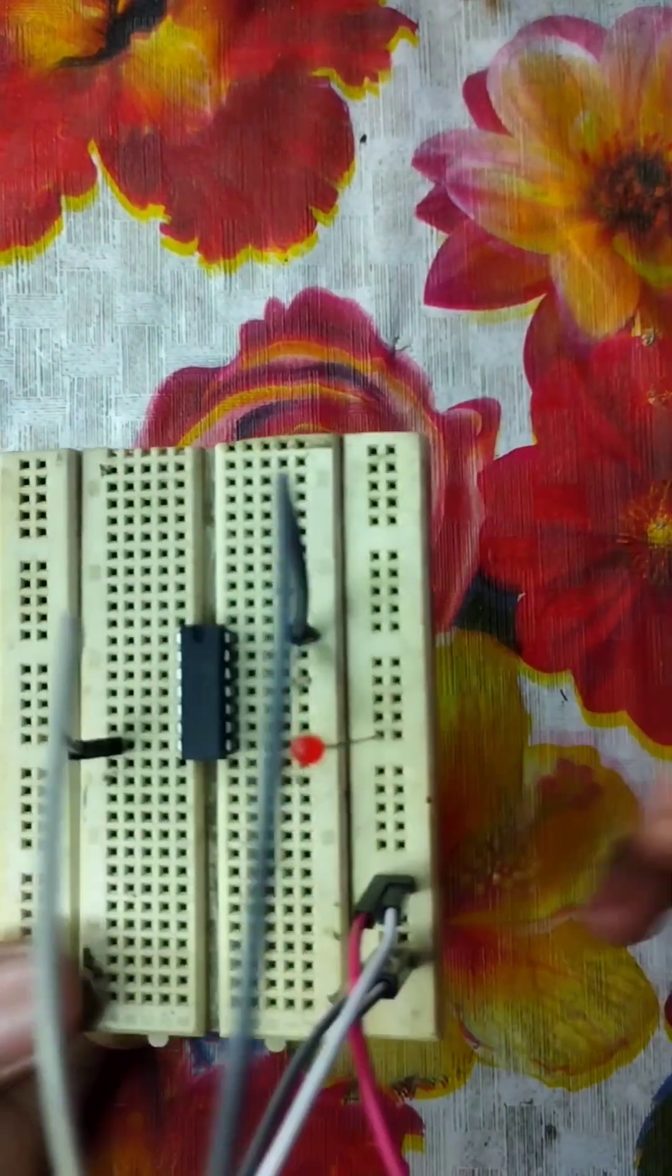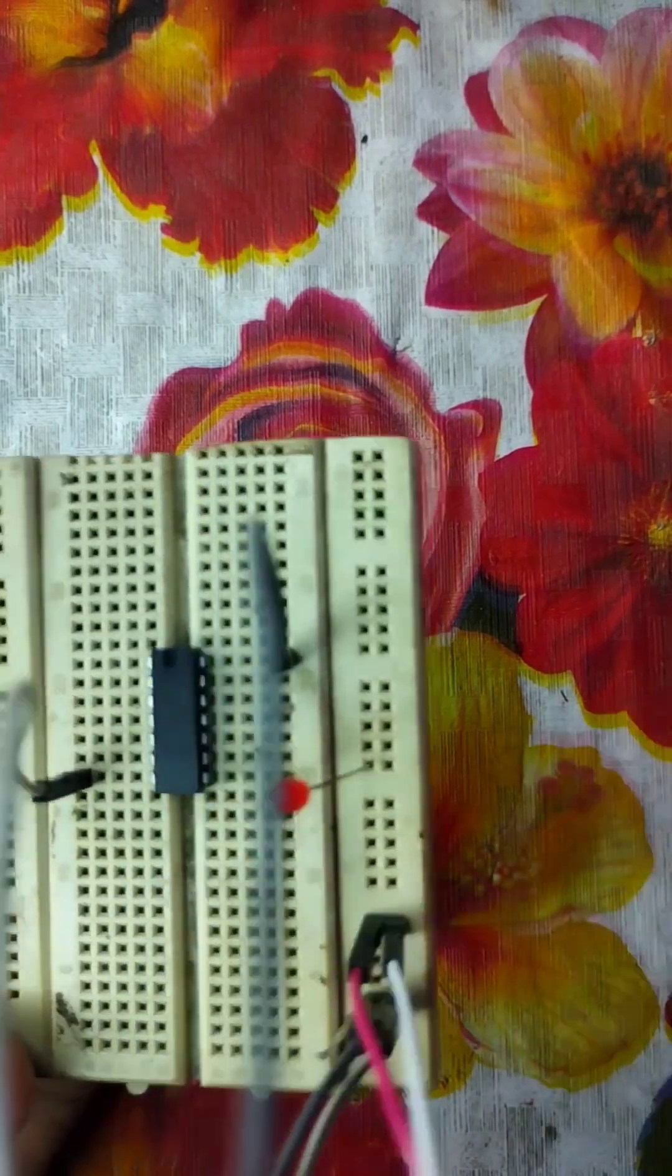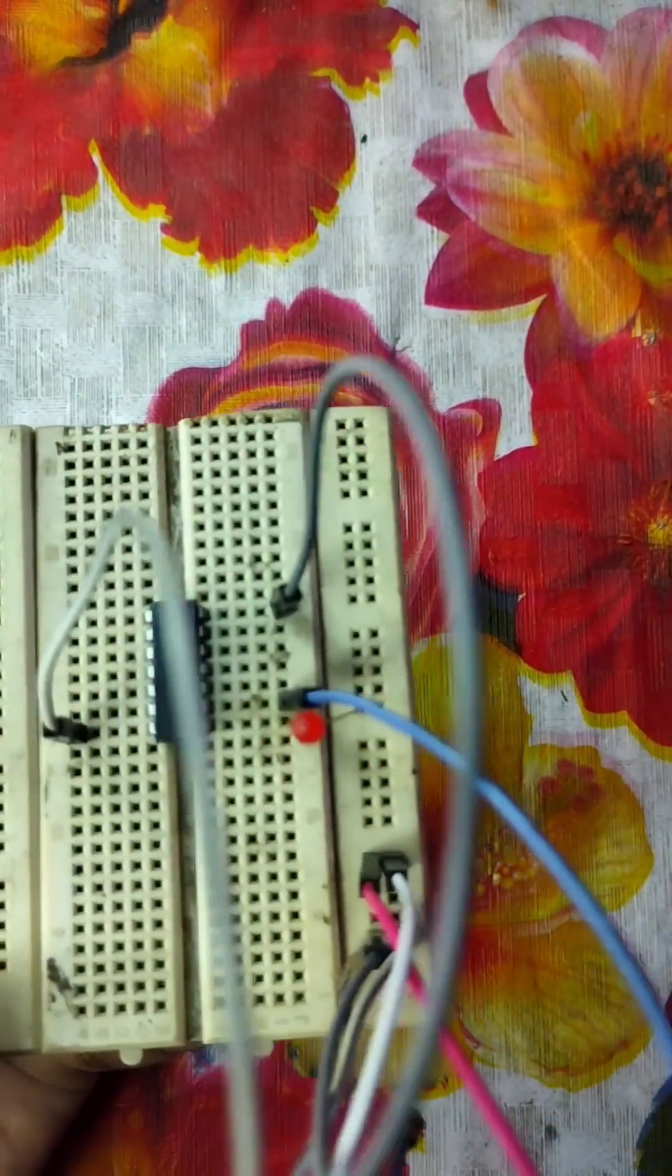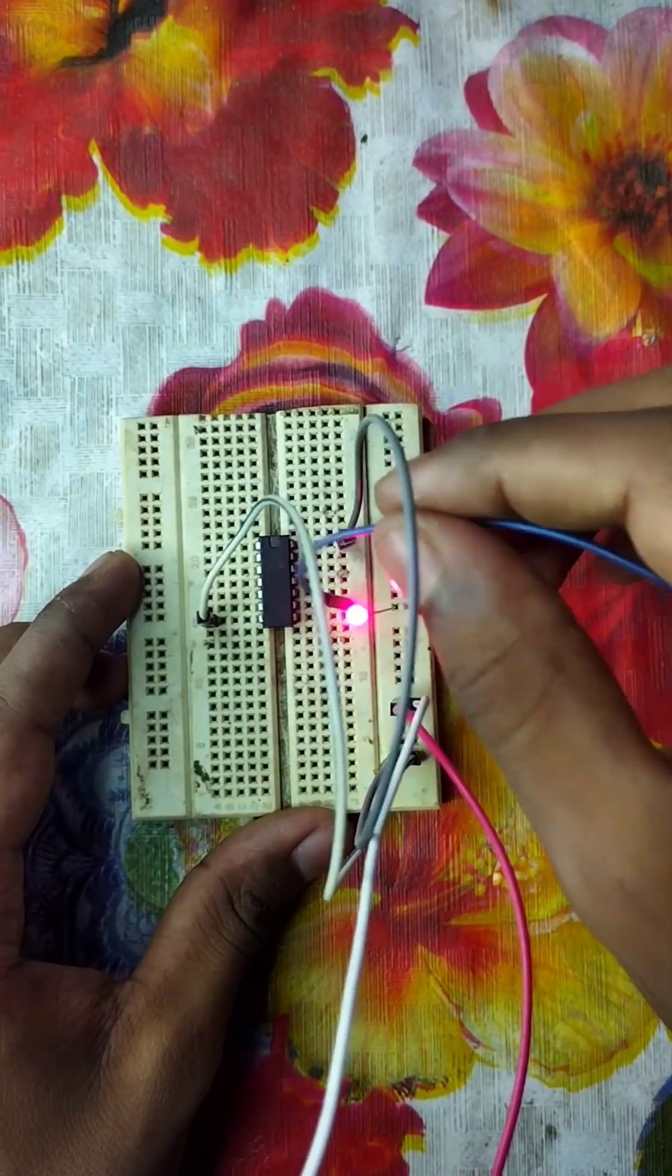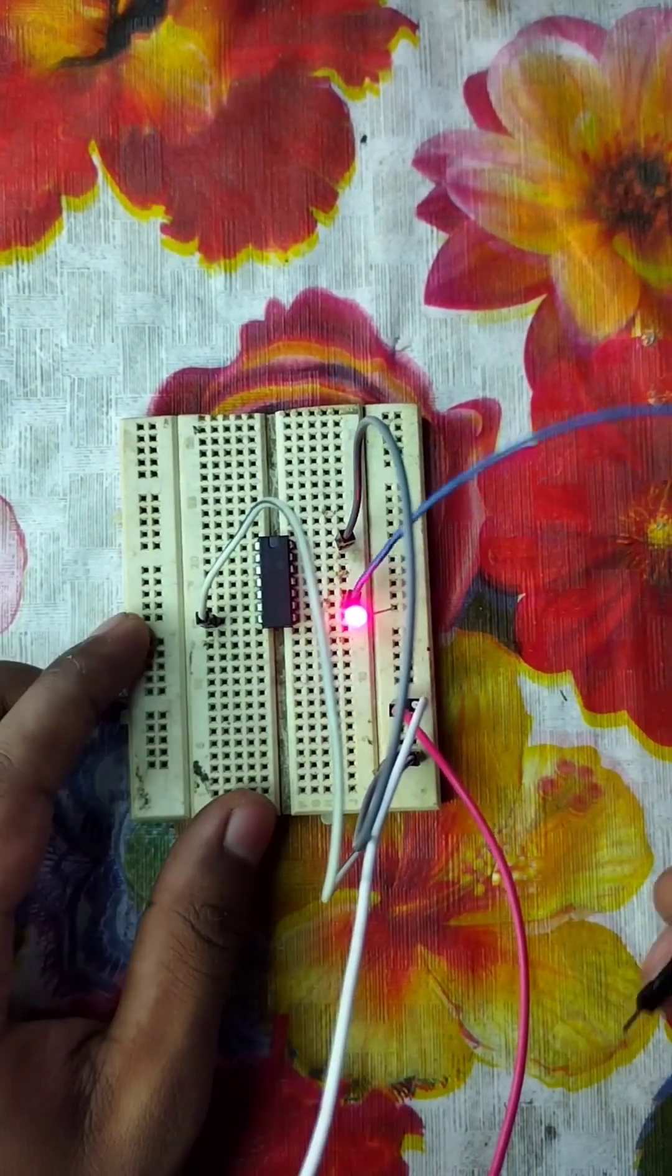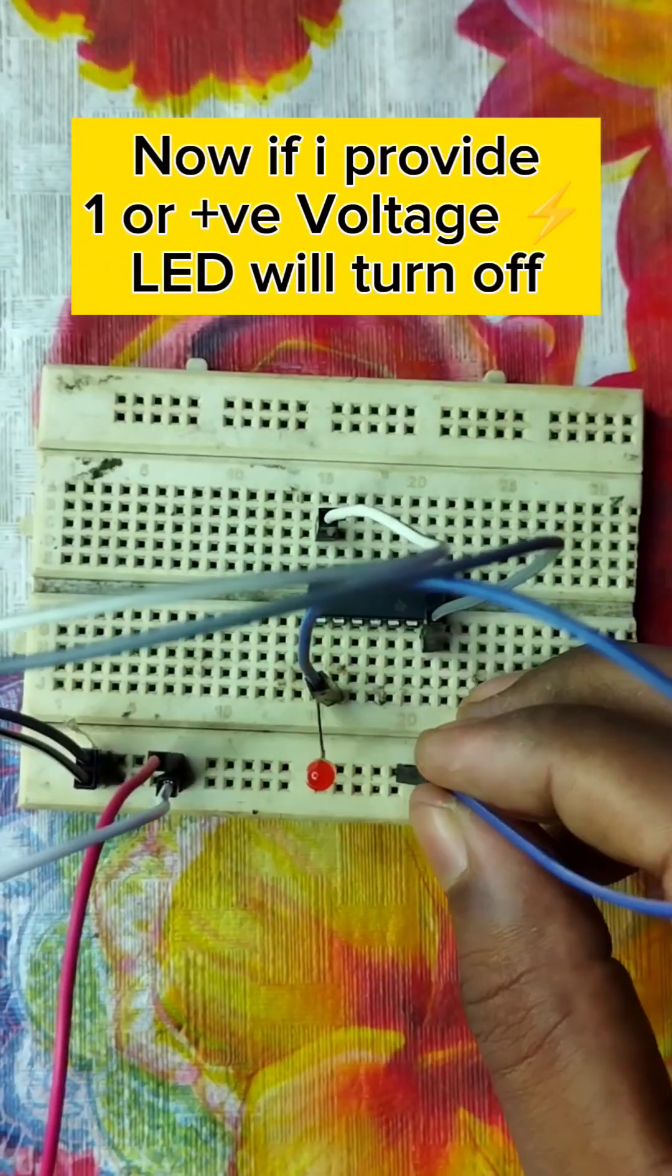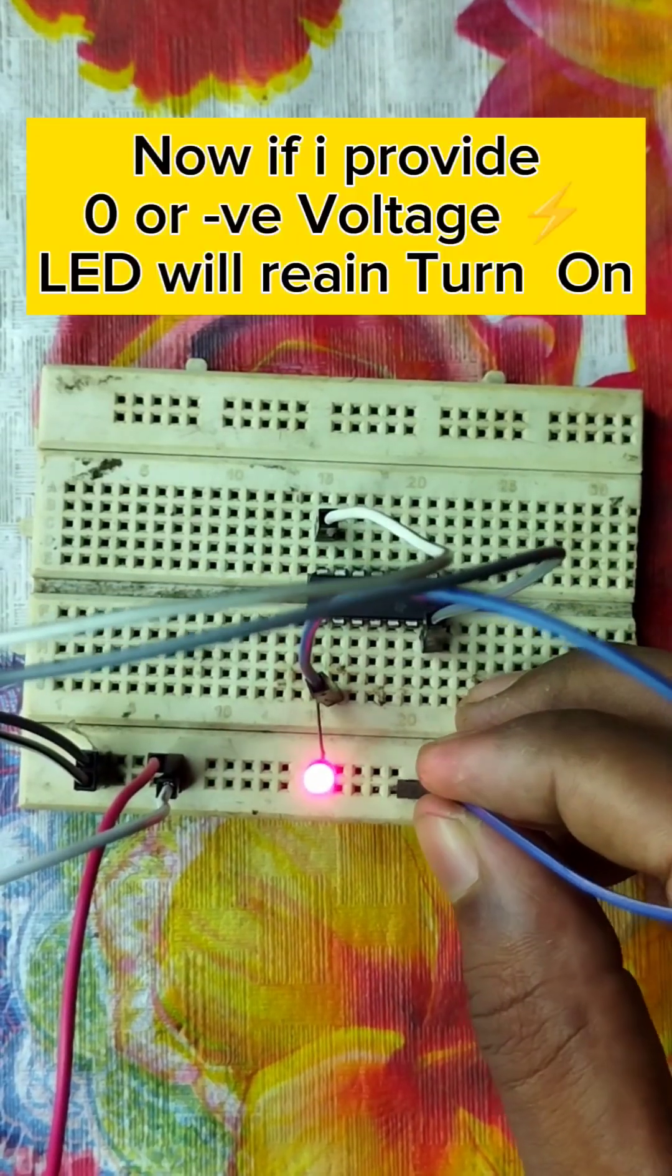Now our circuit is ready. It's time to check. So this is the input terminal. Now the LED is turned on because I have not given any input. So when the input A is one, the NOT gate flips it into zero.